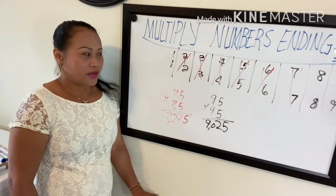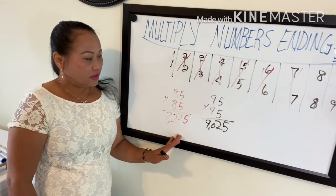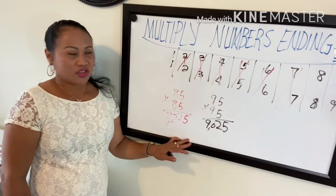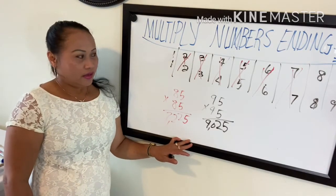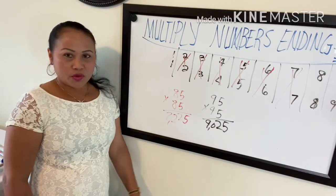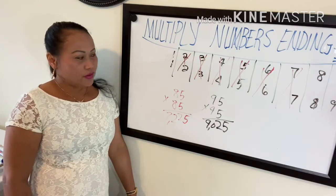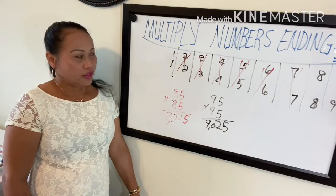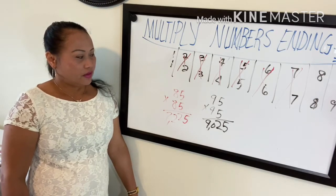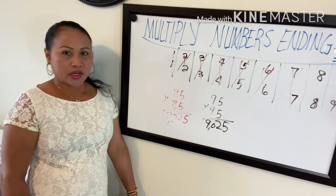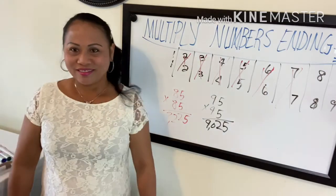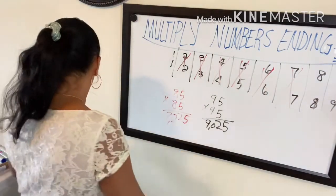I hope you learn this lesson — it's very easy if you know the technique. You can answer very quickly in school. Just bring down 25, add one to the top number, and then multiply.